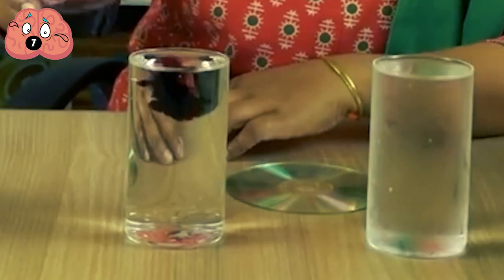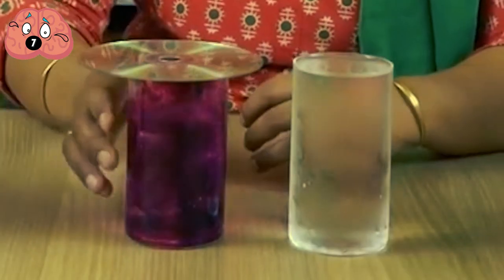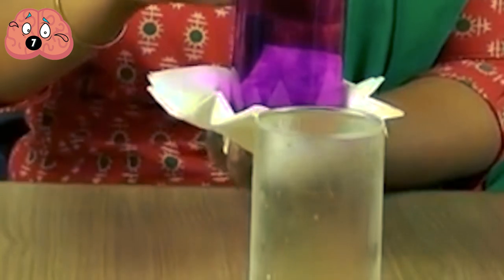If you enjoyed that one, then try this second trick. You'll have to use colored water and a lighter liquid, such as whiskey. Cover the glass with water with a card, and then put it on top of the whiskey glass. Gently pull the card to create a small opening, and this time they change places. The colored water goes to the bottom, and the whiskey goes up.